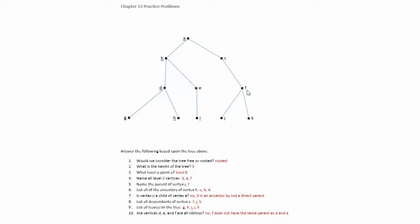List all the ancestors of point H. So find H and then just follow your way all the way up to the root. We have D, B, and A.